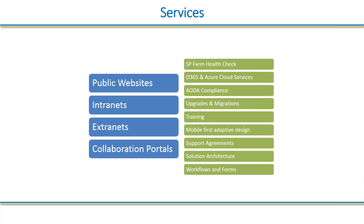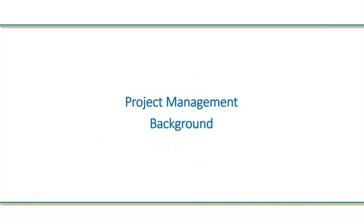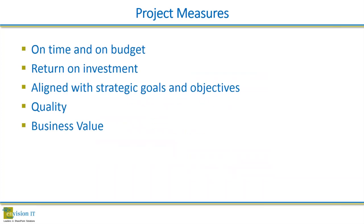I wanted to start with just a little background from a project management point of view. When people think about projects and successful measures of those, what comes to mind? One of the first things we often hear — we get asked this ourselves all the time as a systems integrator delivering projects to our clients — is: are you on time and on budget? That's a tough one. We'll talk about some of the constraints for managing a project, changes in scope and such. But obviously it's a very important thing for organizations looking to measure the success of their projects.